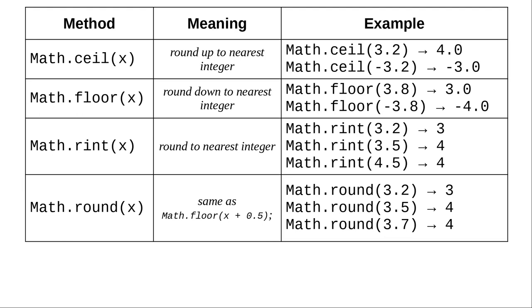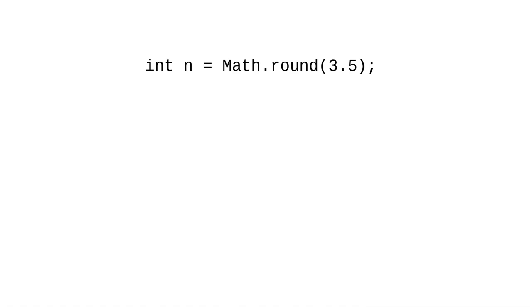The round method returns a long when you give it a double. That means you can't do this. Instead, you have to do a cast to make sure you get an integer.